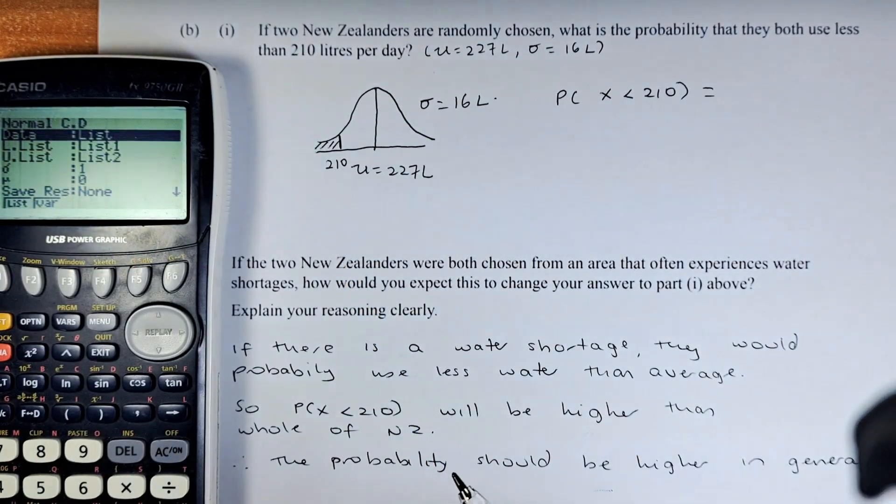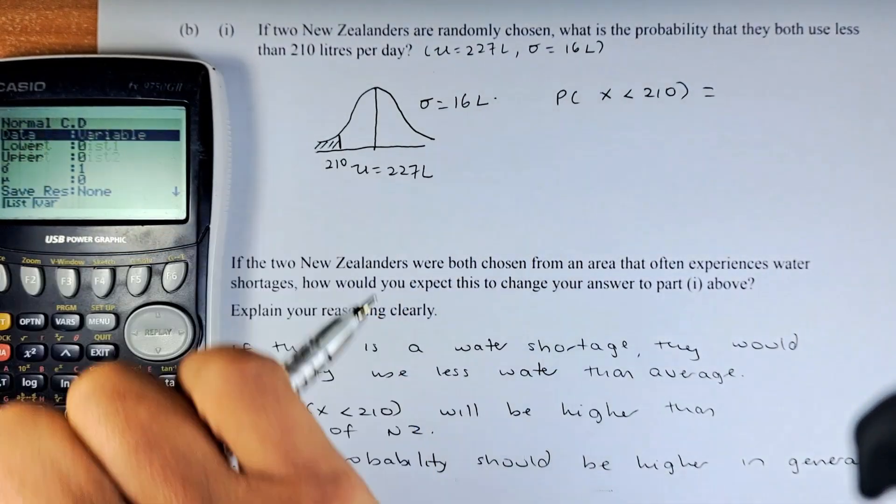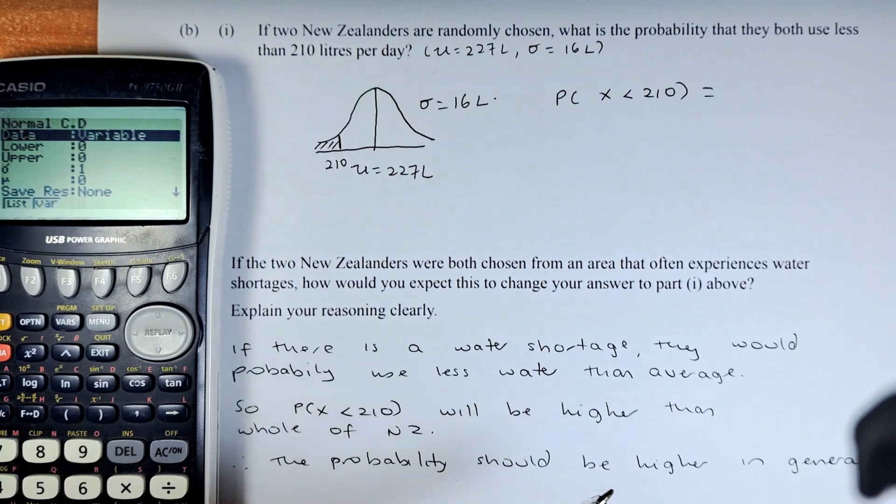And now we are going to key in the data. The data has to be in variable. So change to F2. So we are in F2 now. Execute.